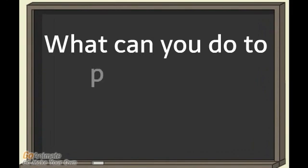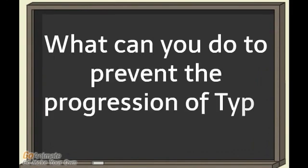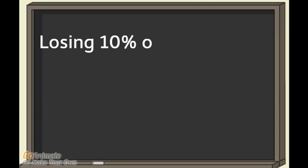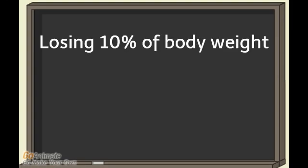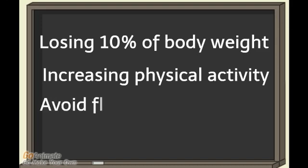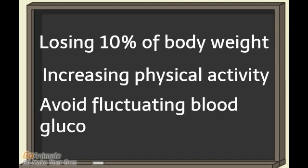So what can you do to prevent the progression of type 2 diabetes? Type 2 diabetes is unique because it is a disease that you can help treat. Losing 10% of your body weight, increasing physical activity, and avoiding fluctuating blood sugar levels are steps that you can take to prevent the progression of this disease.